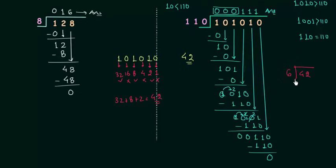42 divided by 6 is definitely 7, 7 times 6 is 42 and 111 is 7. So our answer is correct and now we will move to homework problem.